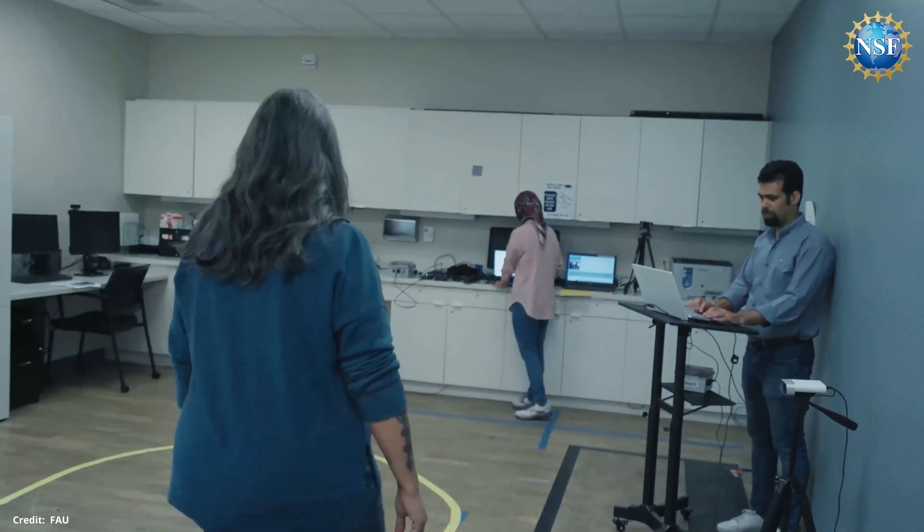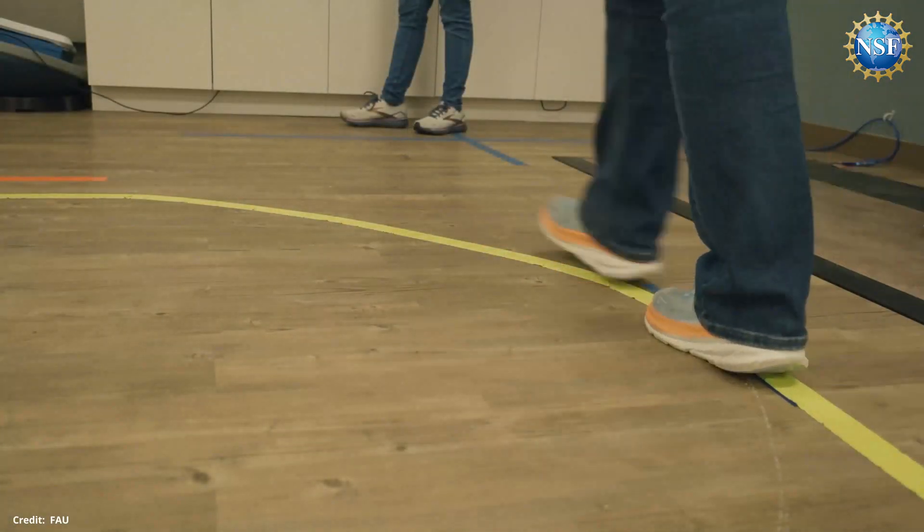The team's first-of-its-kind research uses curved walking tests for early detection of MCI. The unique aspect of this research is comparing curved walking versus straight walking. This hasn't been done before, especially in the area of MCI versus healthy controls.